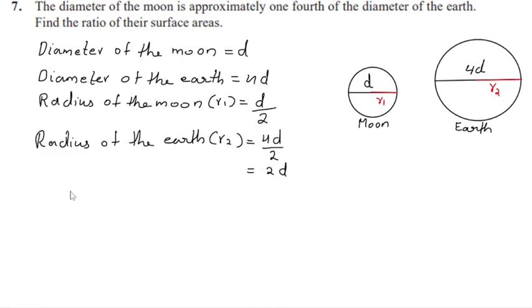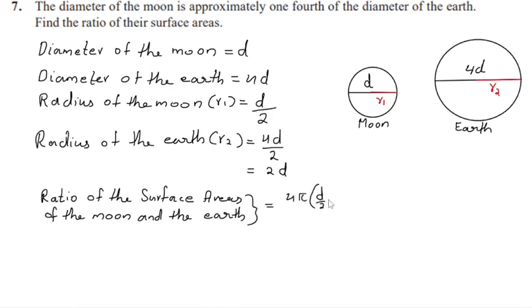The ratio of the surface areas of the moon and the earth is 4π(d/2)² divided by 4π(2d)². Cut this 4π. Now take the square of d/2 and 2d. Then we get d²/4 divided by 4d².